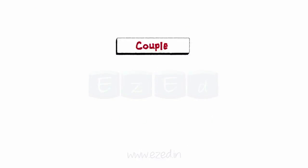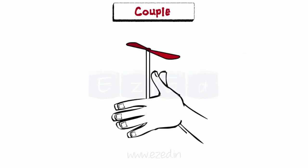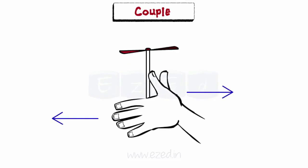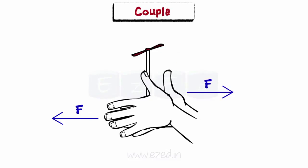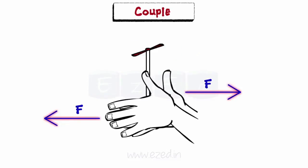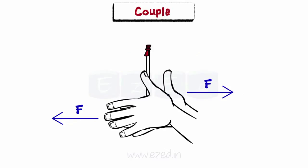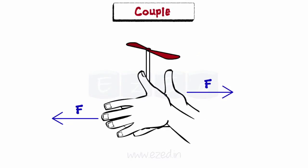Now, let's learn what a couple is. A couple is a special case of parallel forces. A couple is a pair of forces equal in magnitude, oppositely directed, and displaced by a perpendicular distance. It is a system of forces with a resultant moment, but no or zero resultant force.